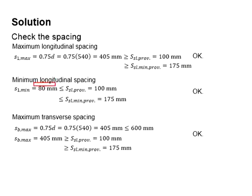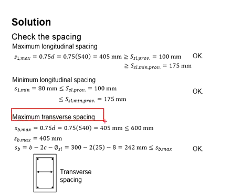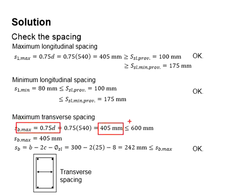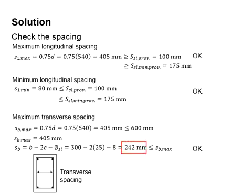The minimum spacing is determined as 80 mm, which is less than the provided spacing, therefore it is considered acceptable. The maximum transverse spacing is limited by 0.75d, which is 405 mm, and this is also less than 600 mm, so the value of 405 mm is adopted. The actual transverse spacing is calculated and found to be 242 mm, which is less than the maximum allowable transverse spacing, therefore it is considered acceptable.